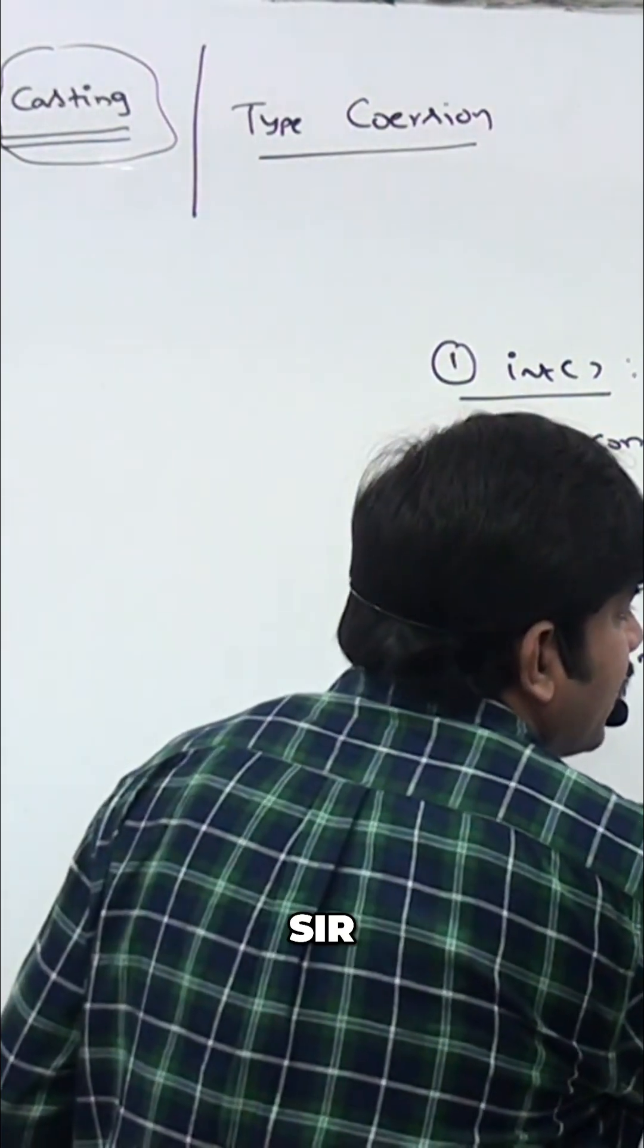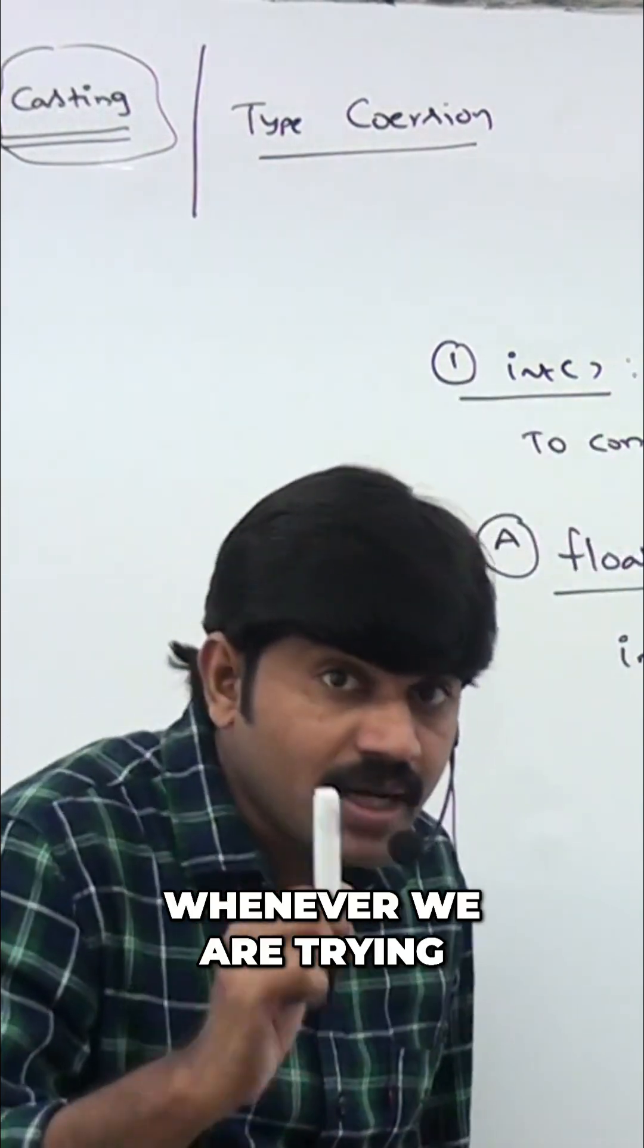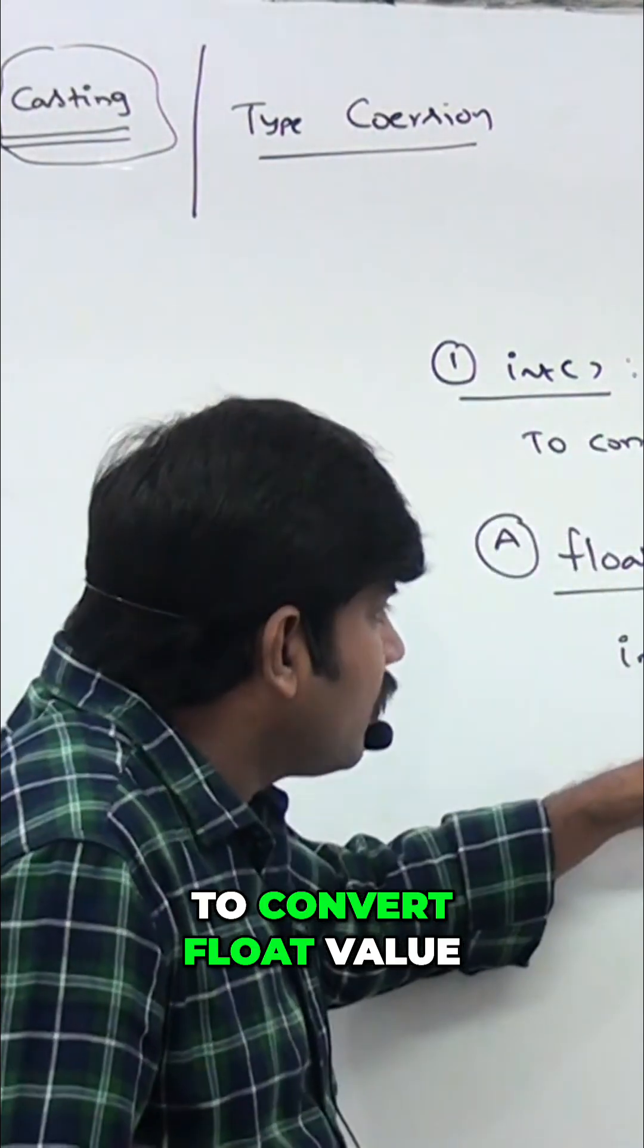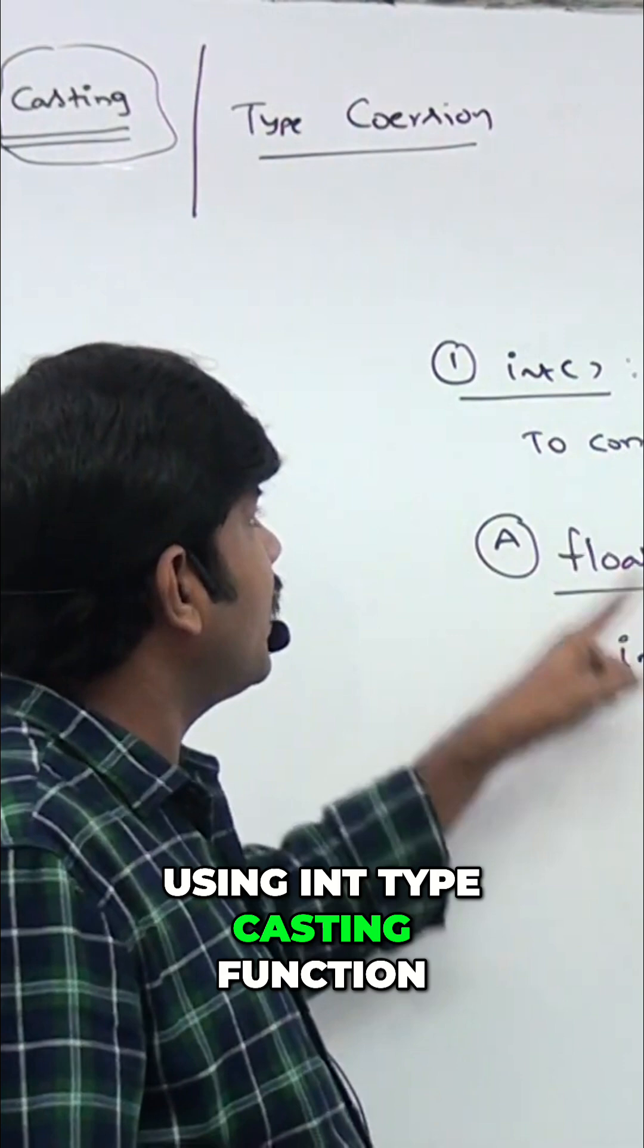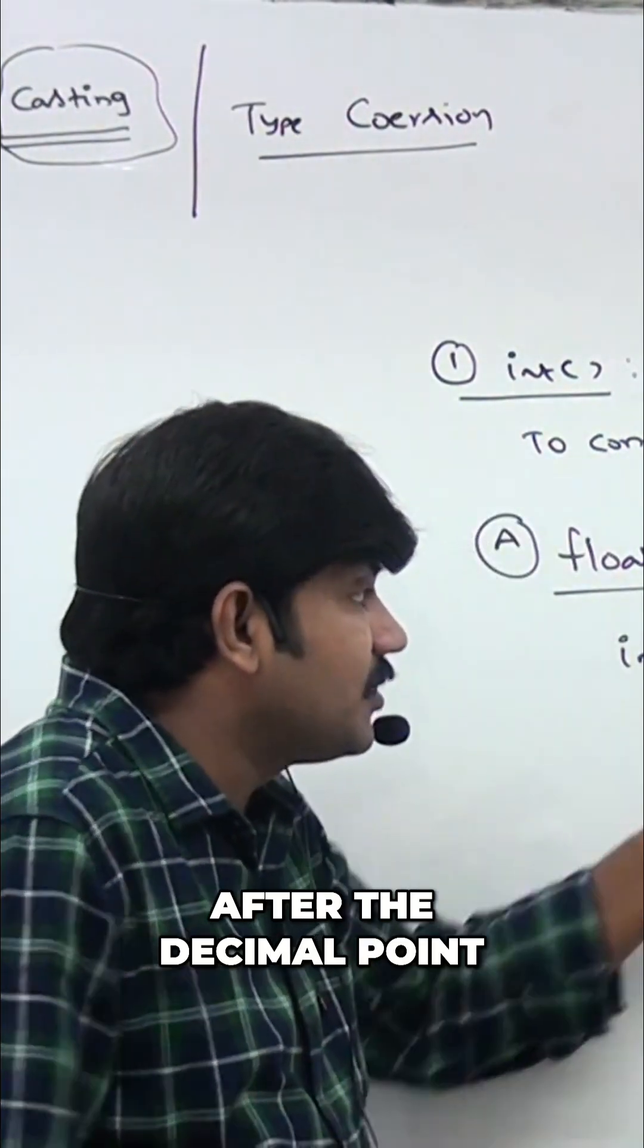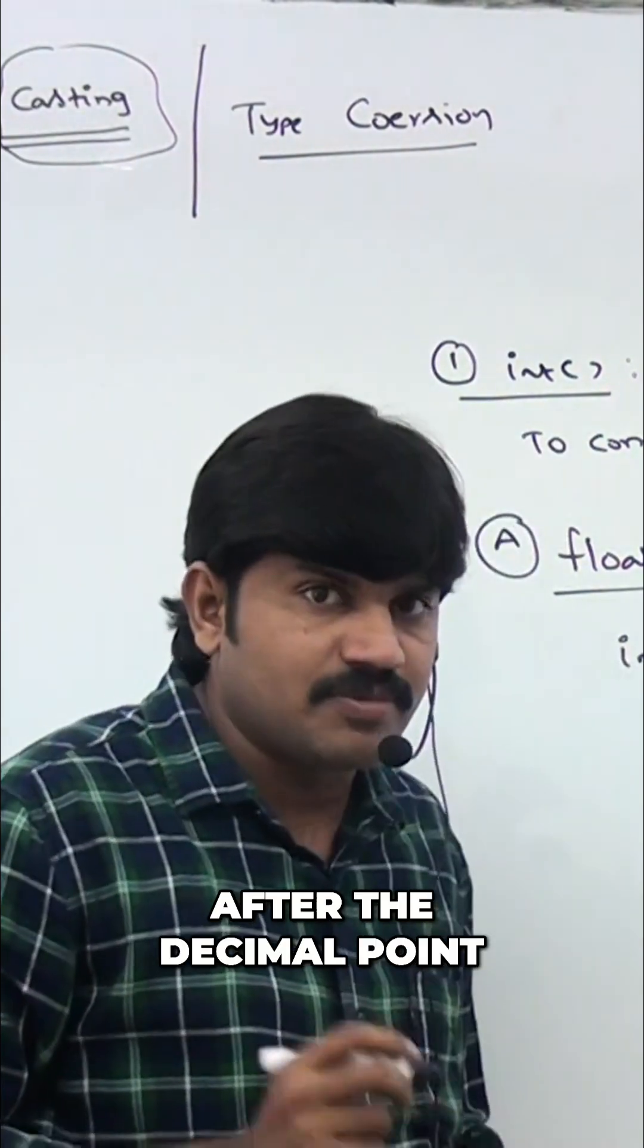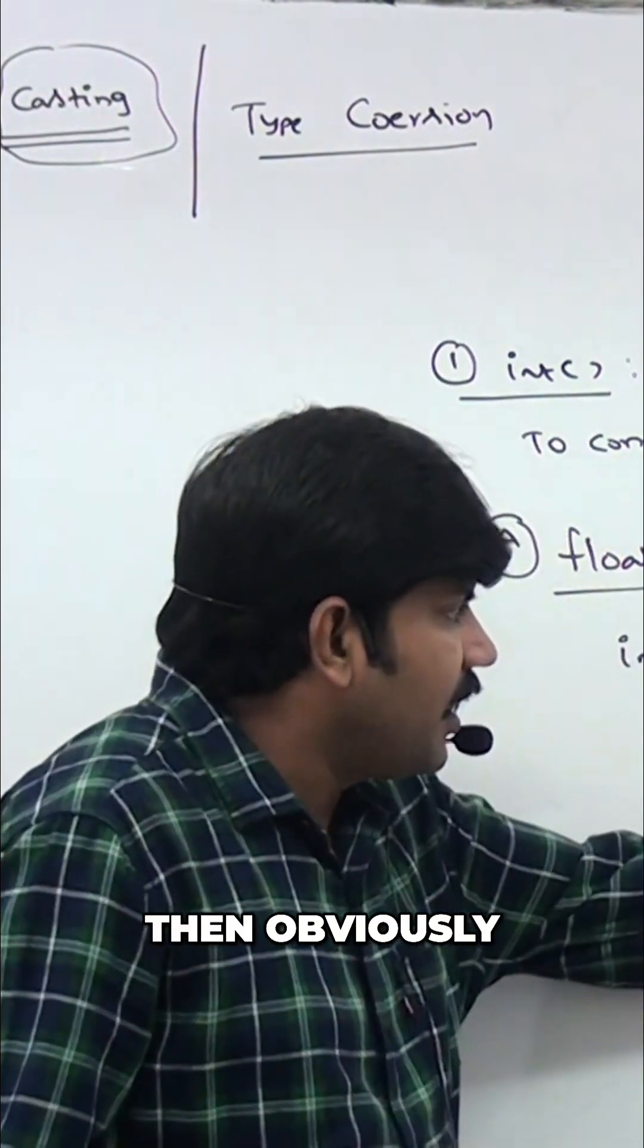What is the output we are going to get? Very simple, 10 we are going to get. Whenever we are trying to convert float value to int type by using int type casting function, the digits after the decimal point will be gone. The digits after the decimal point will be gone, then obviously the output we are going to get is simply 10.